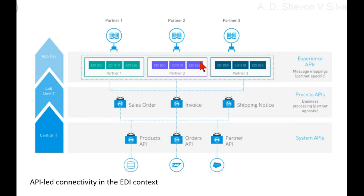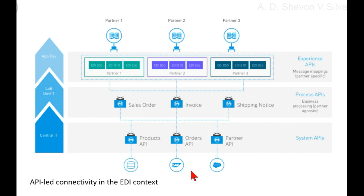The diagram illustrates the following APIs. The System API layer provides consistent, managed, and secure access to backend systems by abstracting and unlocking data from core systems such as legacy backend databases, SAP, and Salesforce to create product APIs, order APIs, and partner APIs.